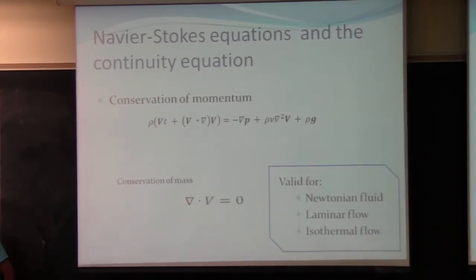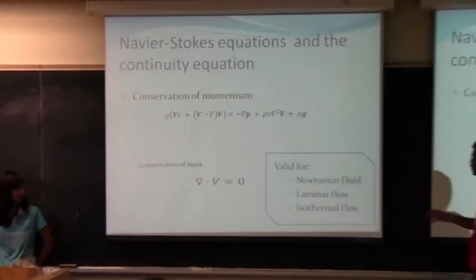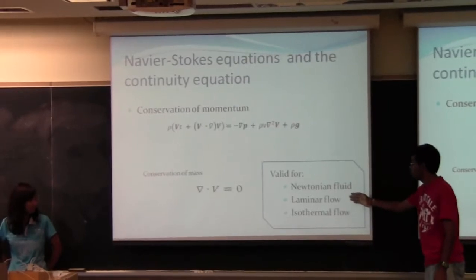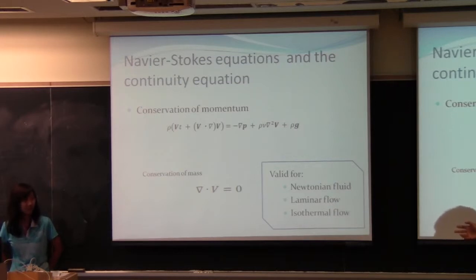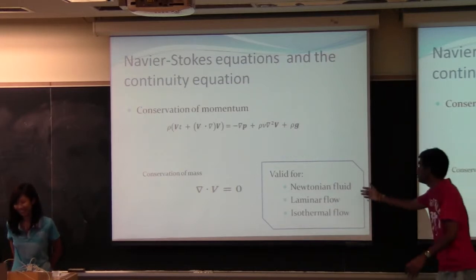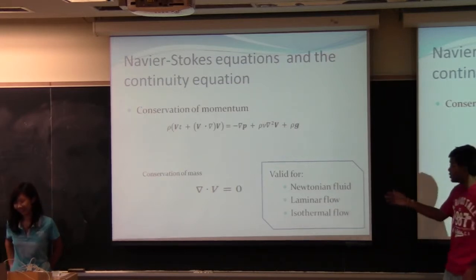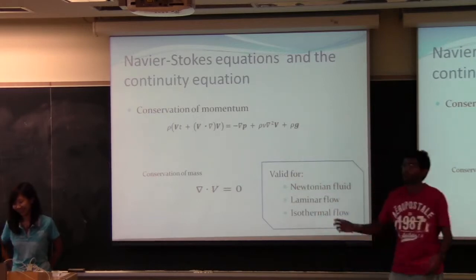There are a couple conditions under which these equations hold. And we assume a Newtonian fluid laminar flow isotherm. All that means is that it is valid for what is happening in the eye. So the aqueous humor satisfies these three conditions. And by so doing, we can use these to model the fluid flow.